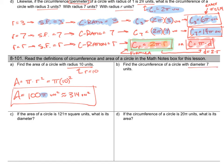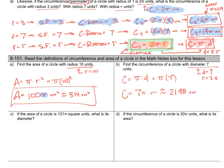Part B: find the circumference of a circle with a diameter of 7. Circumference is pi times d or 2 pi r. Using pi times diameter: pi times 7 gives a circumference of 7 pi units, which is approximately 21.98 units using 3.14 for pi. Using the pi button on your calculator gives a slightly different decimal because it uses more precision than 3.14.